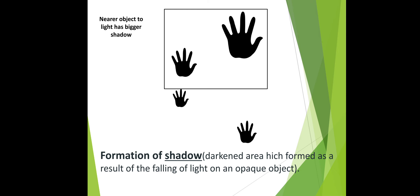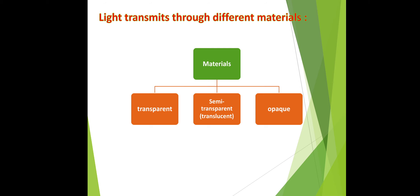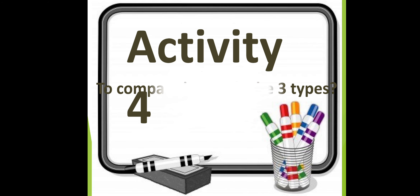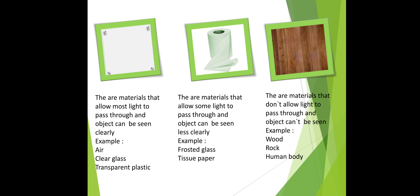Light transmits through different materials. These materials are: transparent, semi-transparent (translucent), and opaque. Examples: transparent — glass; semi-transparent — tissue paper; opaque — wood or cardboard. Let's compare these three material types.